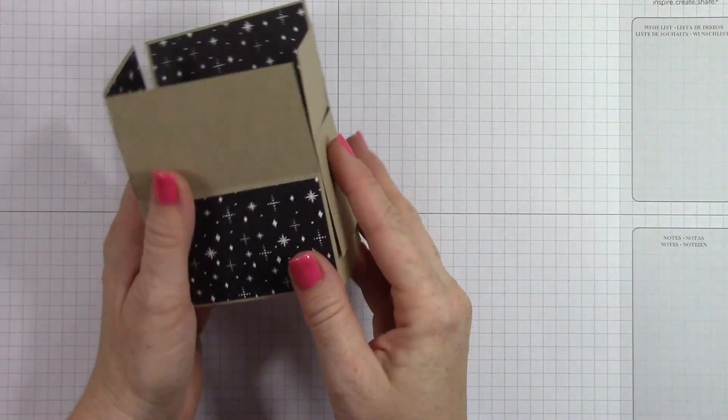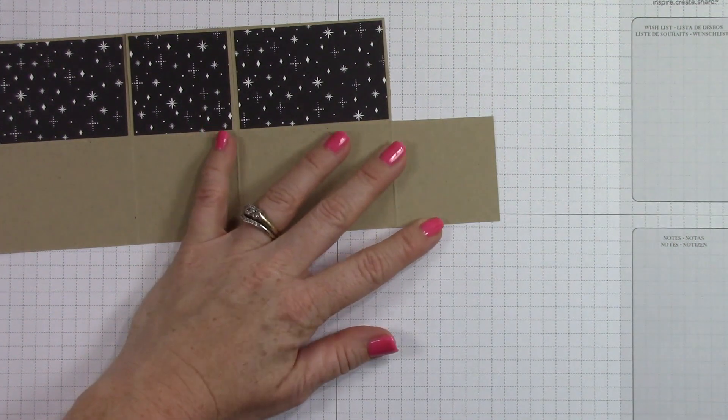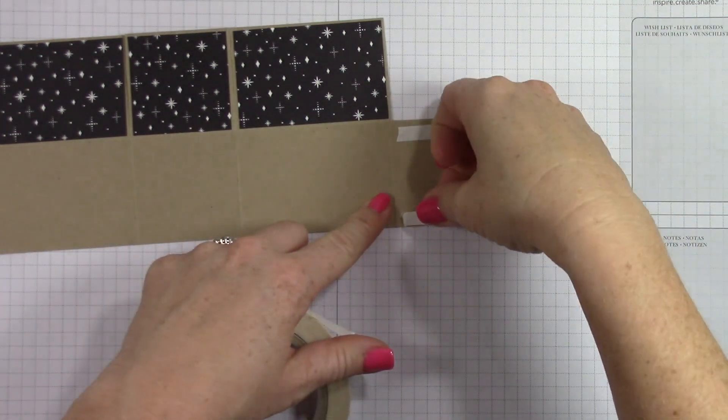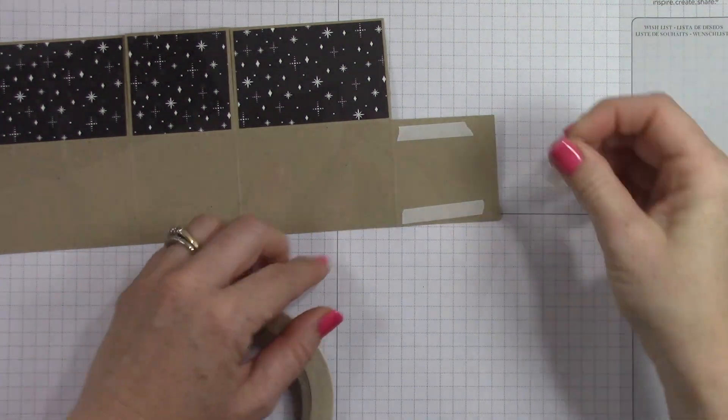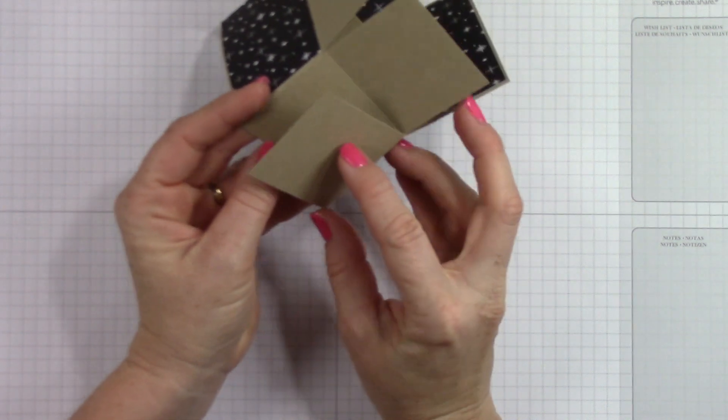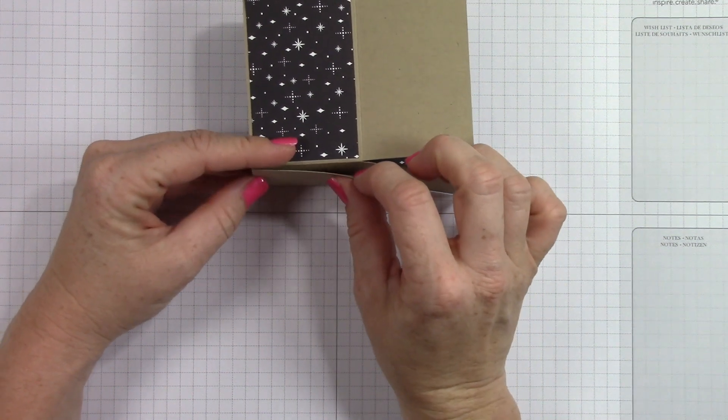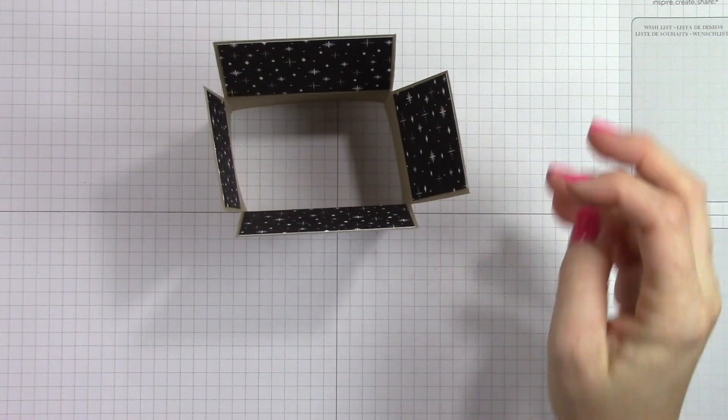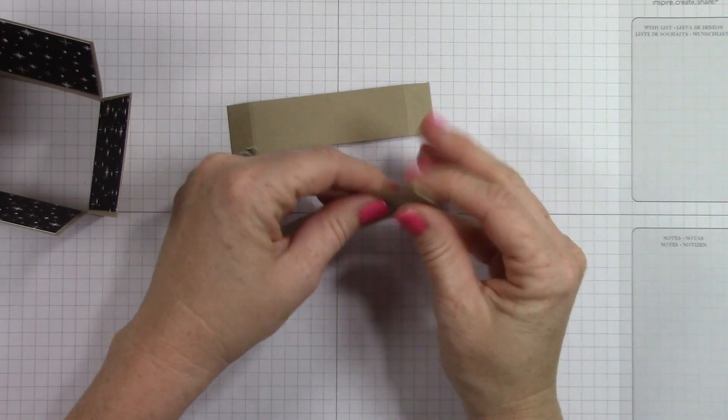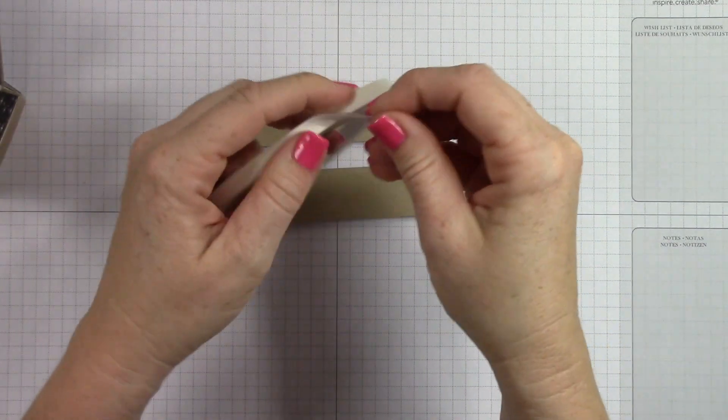All right. So now we're going to close this box up by using that little tab at the bottom. And you can just use fast fuse adhesive or tear and tape. I was out of fast fuse, so I ended up using tear and tape. And you do need to use something that is a strong adhesive because it is a box. So I am going to just now adhere this tab over the top of the other tab. And I always try to make whichever side is the solid fold my front.